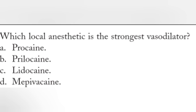All anesthetic solutions are actually vasodilators, except cocaine. Cocaine is a vasoconstrictor. The rest are all vasodilators, but the strongest one is option A, procaine. Procaine is the most potent vasodilator among local anesthetics. It is used clinically to induce vasodilation when peripheral blood flow has been compromised, such as from accidental intra-arterial injection of a drug or injection of epinephrine or norepinephrine into a fingertip or toe. So the strongest vasodilator is procaine.